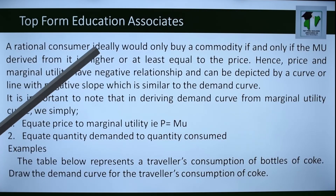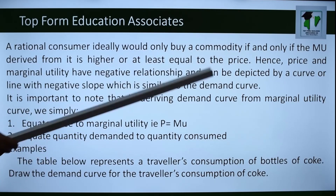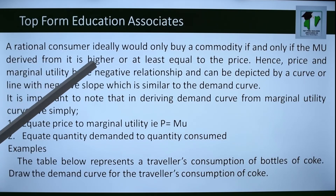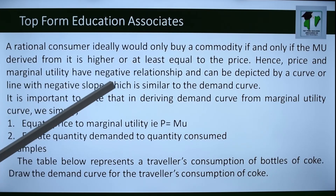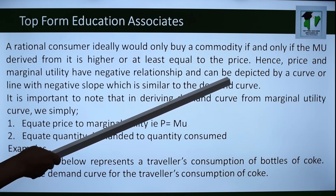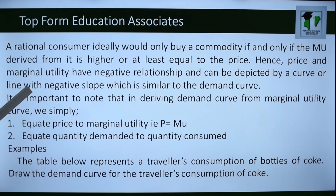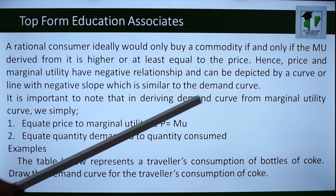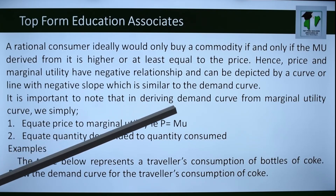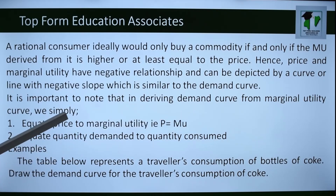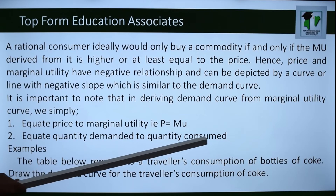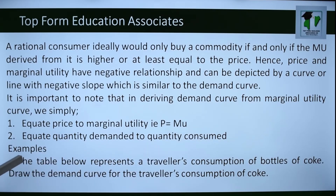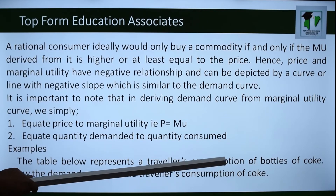A rational consumer would only buy a commodity if the marginal utility derived from it is higher than or at least equal to the price. Hence, price and marginal utility have a negative relationship. In deriving the demand curve from the marginal utility curve, we: (1) equate price to marginal utility (P = MU); and (2) equate quantity demanded to quantity consumed.